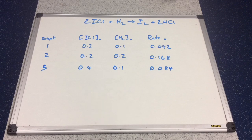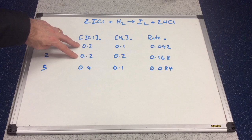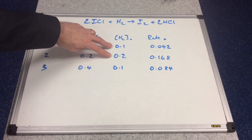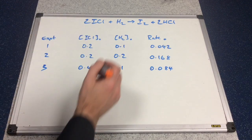Because we've got two reactants, we need to hold the concentration of one constant so we can see the effect that changing the concentration of the other reactant has on the initial rate. In experiments one and two, the initial concentration of ICl is constant, so we just need to consider the concentration of H₂ — and that has doubled.